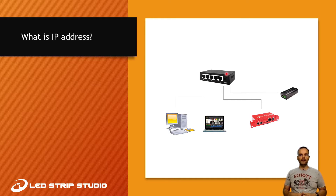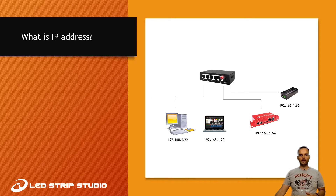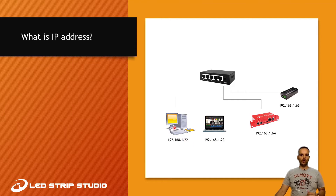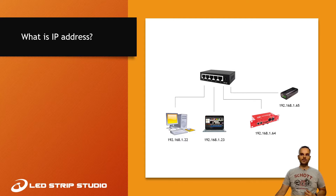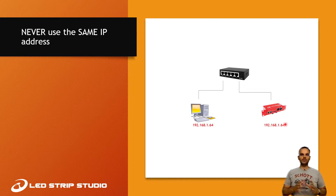And the question is how? They communicate thanks to IP addresses. Every one of those devices has its own IP address. An IP address is basically just four numbers. Typically we use IP addresses like 192.168.1.22 — we usually use .22 for computers. The IP address of the laptop can be .23, and you can use .64 or .65 for devices like LEC3 or Reactivo. All these IP addresses must be different.